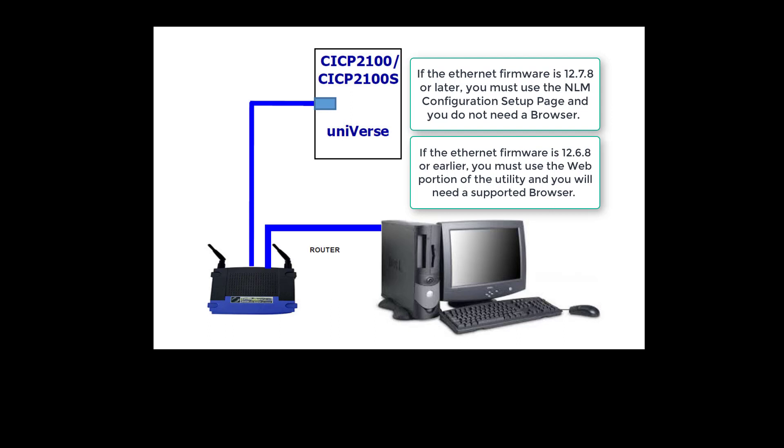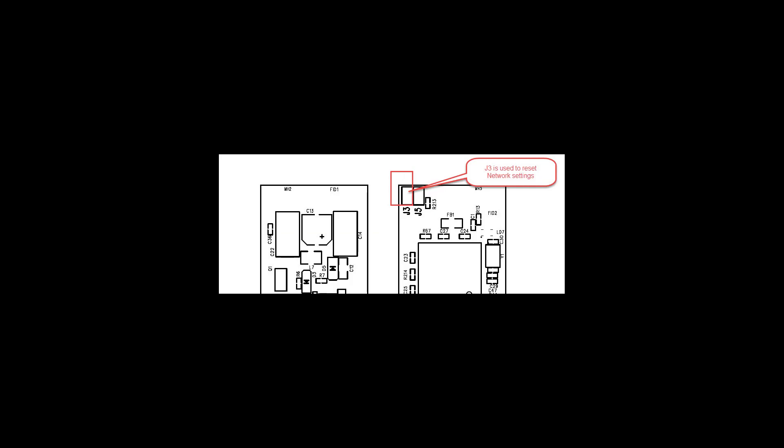By default, the CICP-2100 and CICP-2100S will be configured to DHCP mode when purchased. If there is any previously programmed IP address information already programmed in, it is recommended to reset the unit. To reset the CICP-2100 and CICP-2100S back to the default network settings, you must install a jumper — apply a short across the J3 jumper on the Ethernet interface board while cycling power to the unit. This will default the network adapter back to DHCP mode.